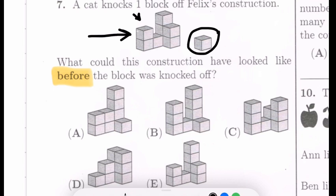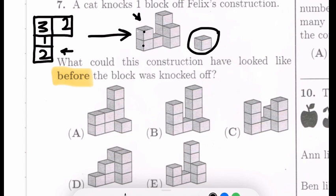First you have to draw out what you would see from the top if you looked down at Felix's structure. It would be this type of shape, like an L but upside down. 1, 2, 3, that makes sense. Then you put numbers in these boxes that say how many blocks are under that box. Over here it's 2 because 1, 2. Over here it's 1. This one is 3, and this one is 2. So now we have the aerial view for Felix's construction with one block knocked off.